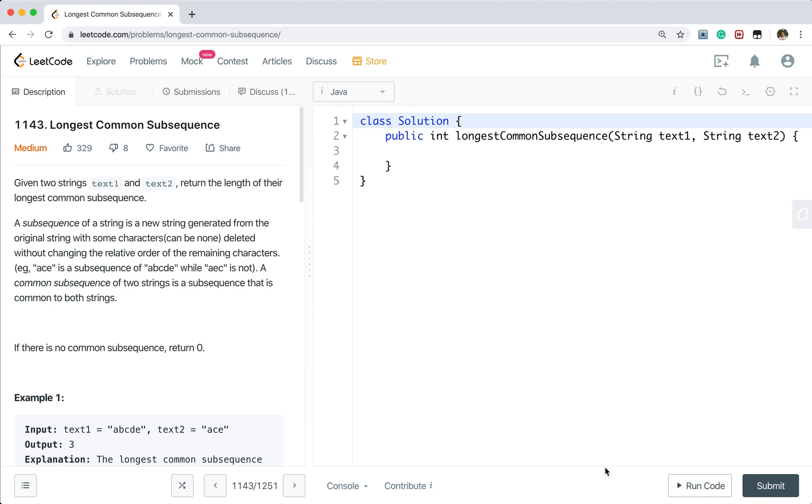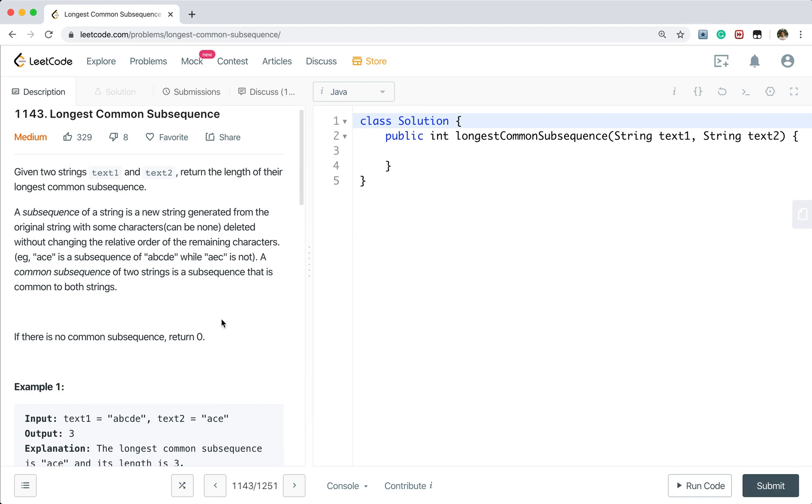We are given two strings text1 and text2, return the length of their longest common subsequence. A subsequence of a string is a new string generated from the original string with some characters deleted without changing the relative order of the remaining characters.